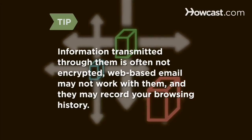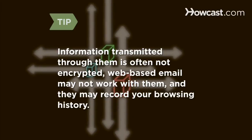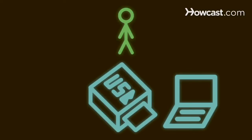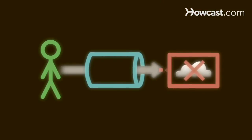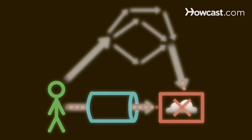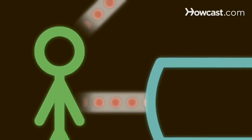Also, information transmitted through these services is often not encrypted, web-based email may not work with them, and they may record your browsing history. Step 5: A more thorough method is the use of either tunneling or anonymizing software. Both types carry a lower risk of being blocked or identified, but also tend to be more difficult to use without technical expertise. You will also likely need your own computer to download software, though some can run off a USB flash drive. Tunneling software encapsulates information through a secure connection, hiding your Internet history. Anonymizing software generally routes traffic through a complex network that is extremely difficult to trace. By disguising traffic, both methods will help you reach an otherwise blocked site.